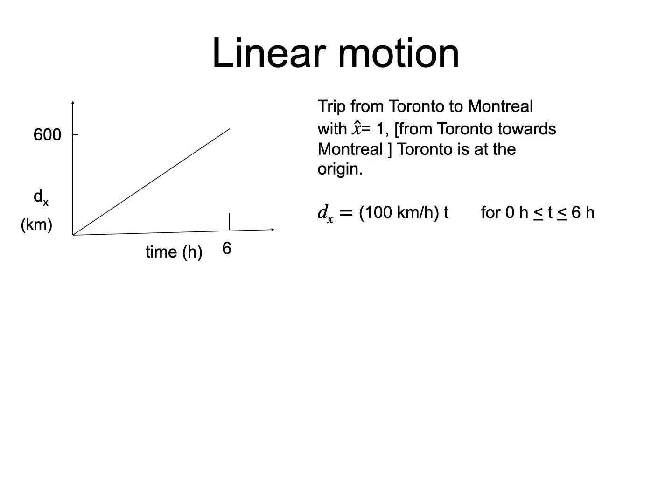To evaluate the x-component of the average velocity, we need to evaluate the ratio of the x-component of the displacement and the change of time over a time interval, which can also be written this way.